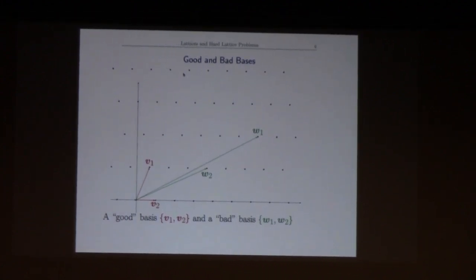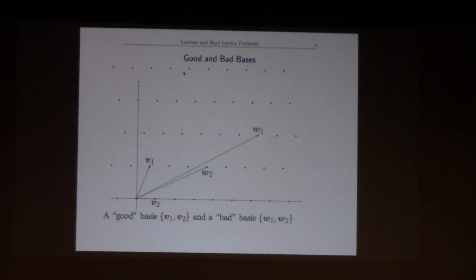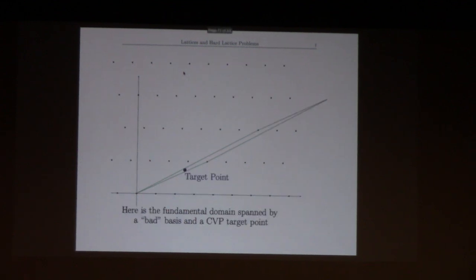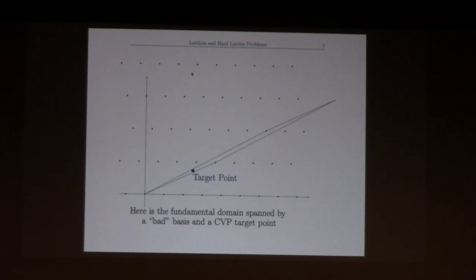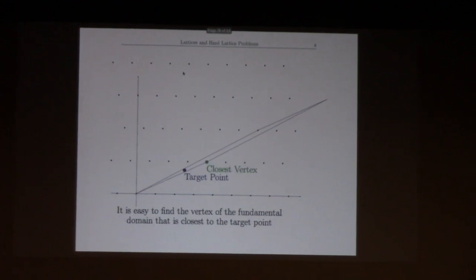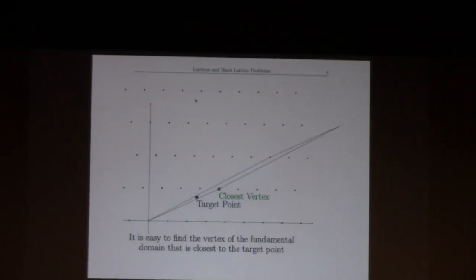So suppose I try to use that bad basis with the algorithm on the earlier slide. In this case I chose a target point that's in the fundamental domain, so my algorithm would just say take the vertices and pick the closest vertex to the target vector.